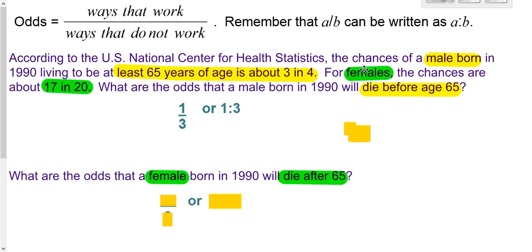So we want to look at females, and it says the chances are 17 in 20 that they'll live to be at least 65. We want to be dying after 65, so that's 17 that work for us. So a total of 20, 17 work for us. That means three don't work for us, so our odds would be 17 to 3.